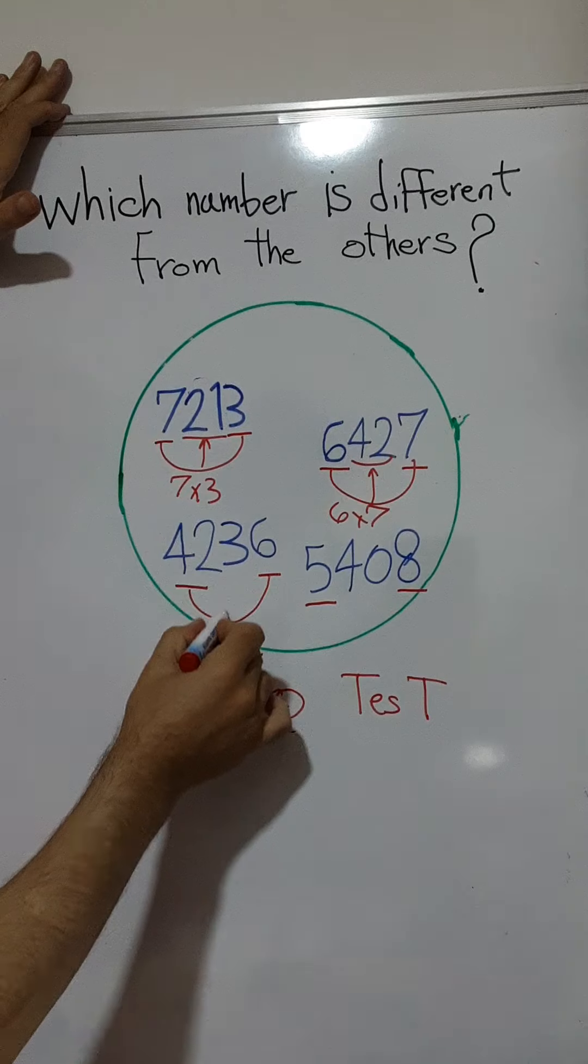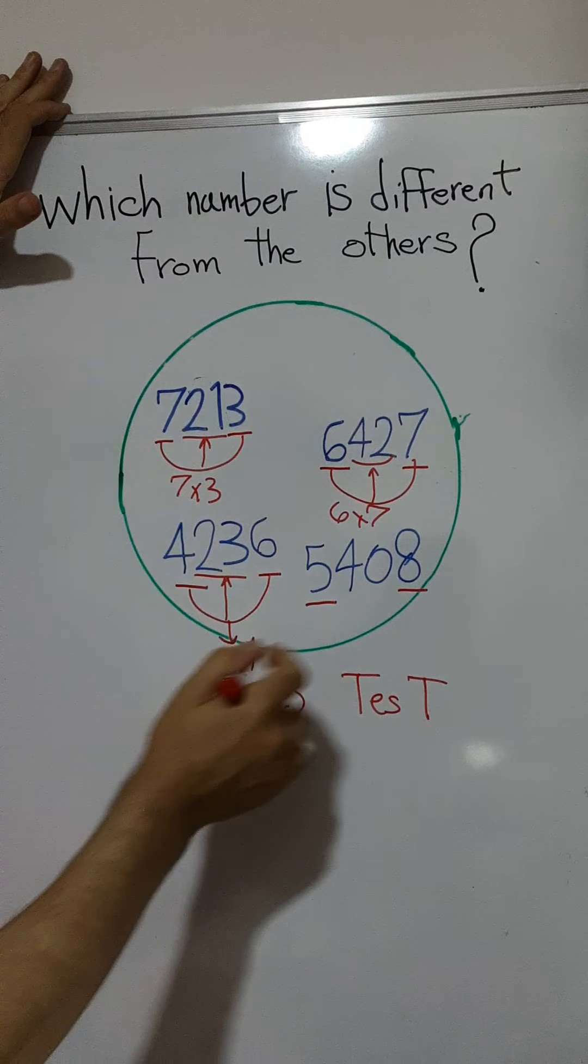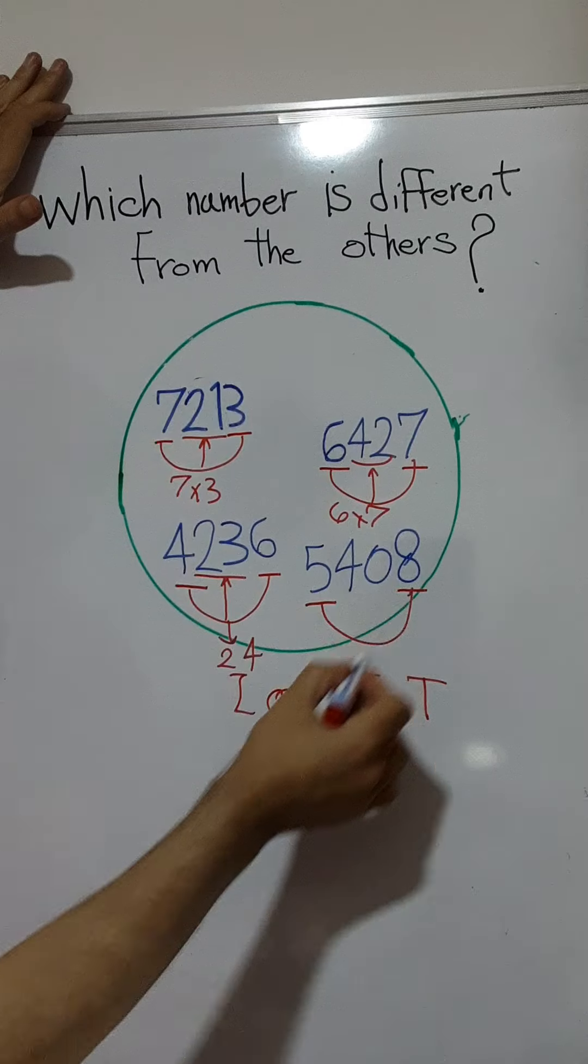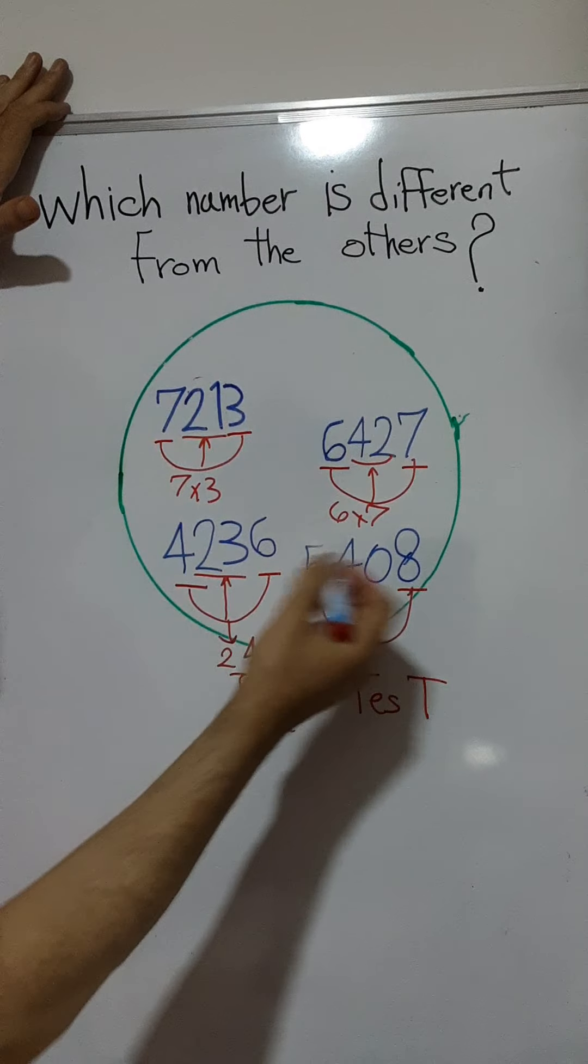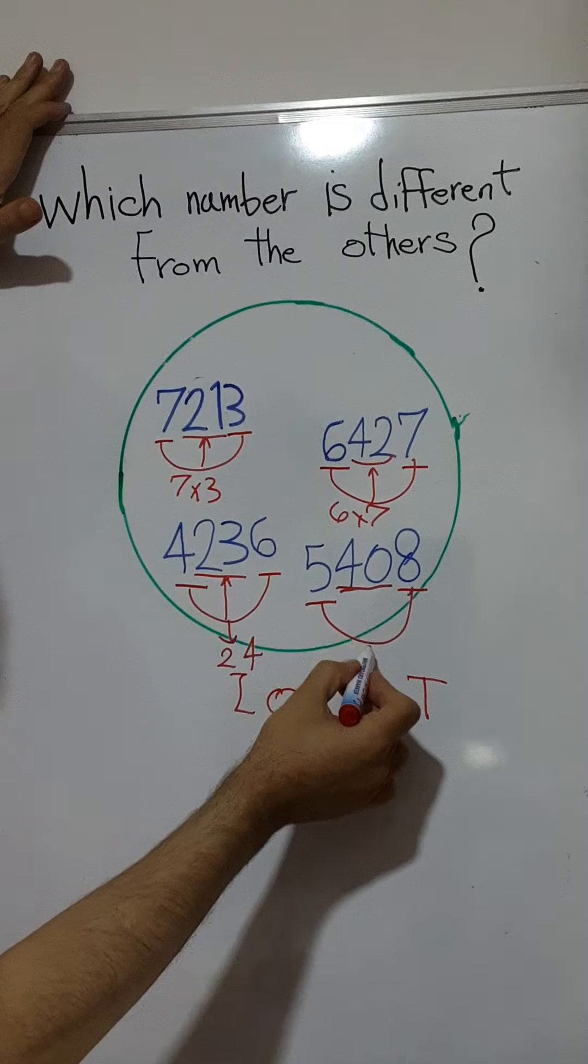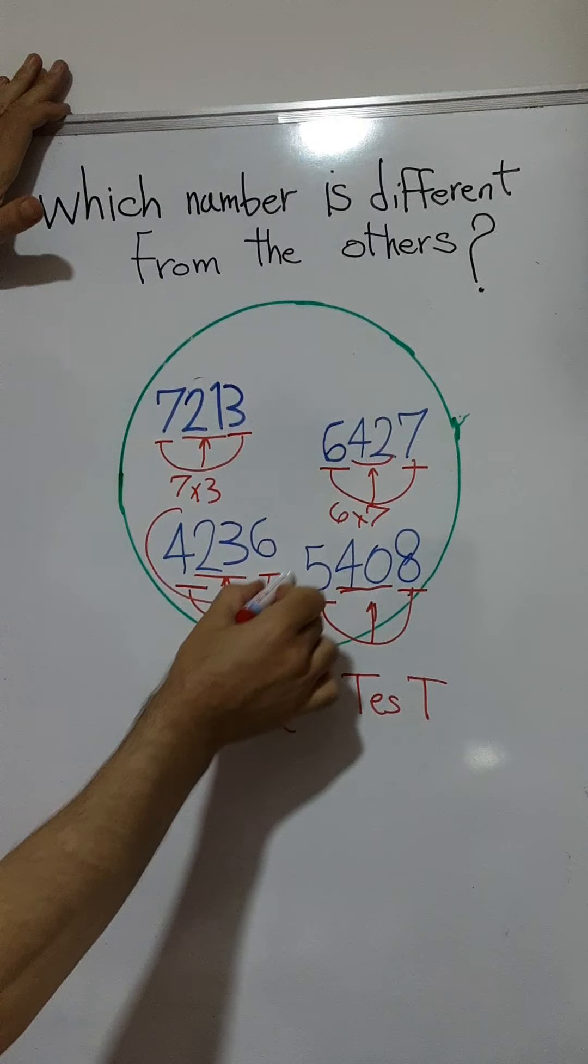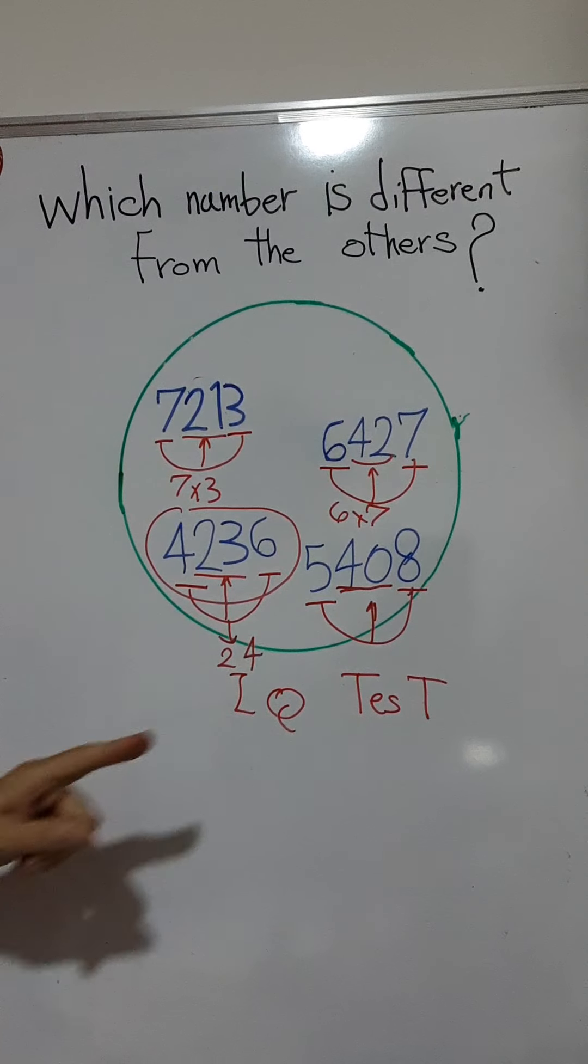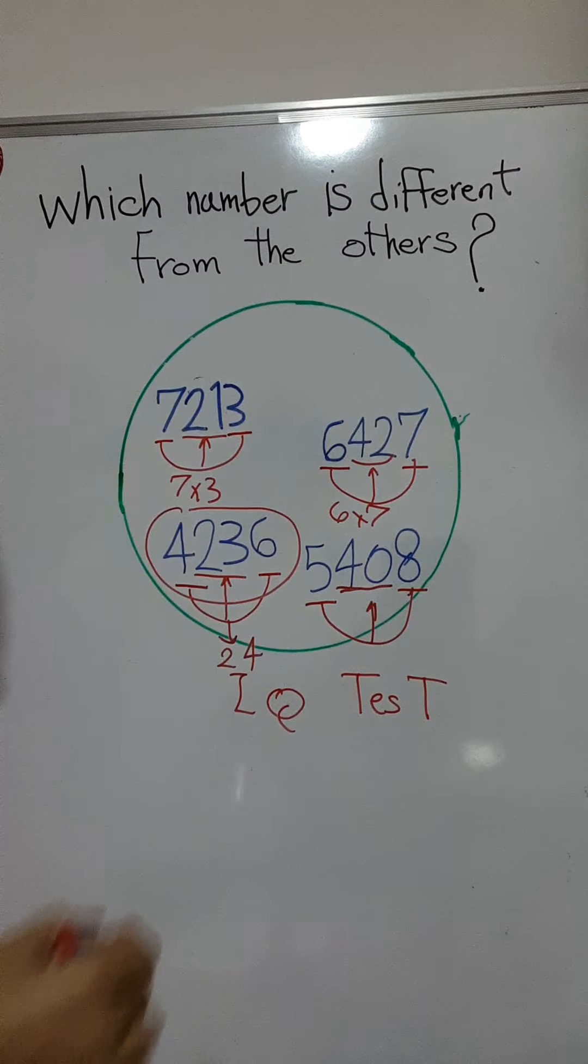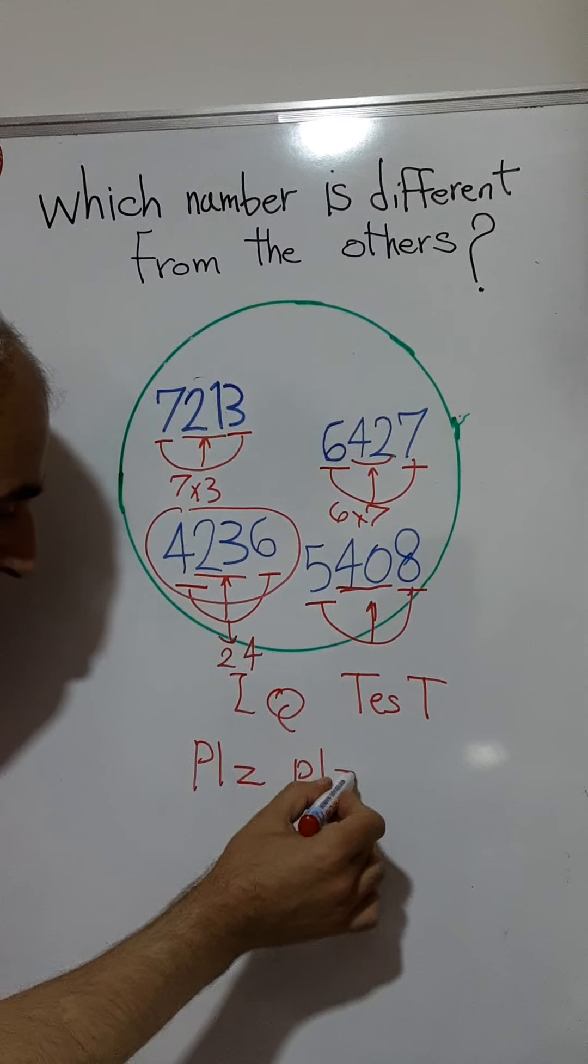24, and it is not answered. We have here 23. Four times six, five times eight excuse me, is 40. This is correct, so this number is different from the others. Just IQ test, please please subscribe this channel.